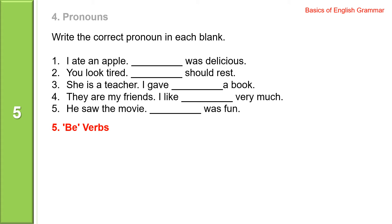Write the correct pronoun in each blank. I ate an apple. Apple is a thing. It was delicious. You look tired, so you should rest. She is a teacher. I gave blank a book. So 'she' is the subject, but here it is an object — she, her — I gave her a book.